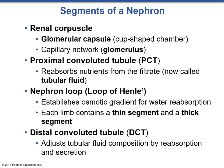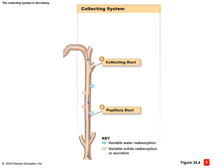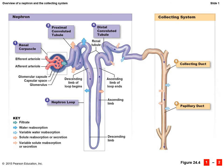Reviewing: the proximal convoluted tubule reabsorbs nutrients from the filtrate, now called tubular fluid — it is primarily involved in reabsorption. The nephron loop, also known as the loop of Henle, establishes an osmotic gradient for water reabsorption, dealing with water and salt reabsorption; each limb contains a thin segment and a thick segment. The distal convoluted tubule adjusts tubular fluid composition with some reabsorption and primarily secretion — more secretion happens here than anywhere else. From the renal tubule, we reach the collecting system, where the collecting duct collects fluid from many nephrons and carries it through the renal medulla into the papillary duct and then drains into the minor calyx.